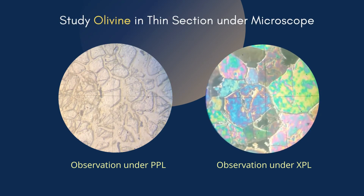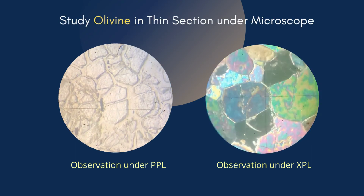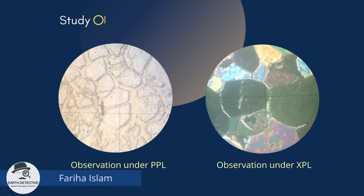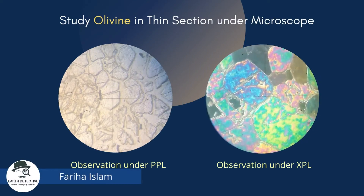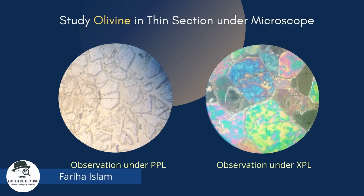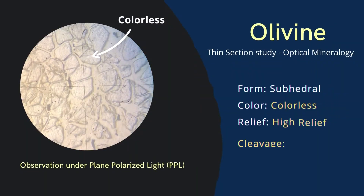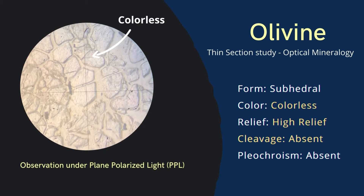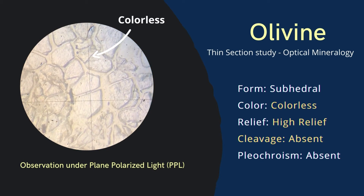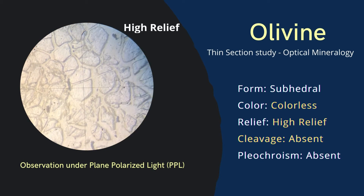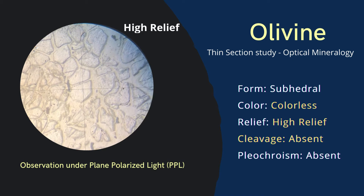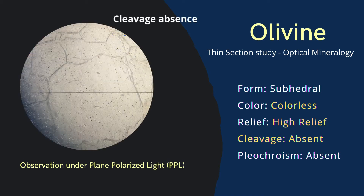Hello everyone, welcome back to Earth Detective. Today we're going to study olivine in thin section under the microscope. You can identify olivine by its colorless appearance, high relief, and absence of cleavage under plane polarized light.